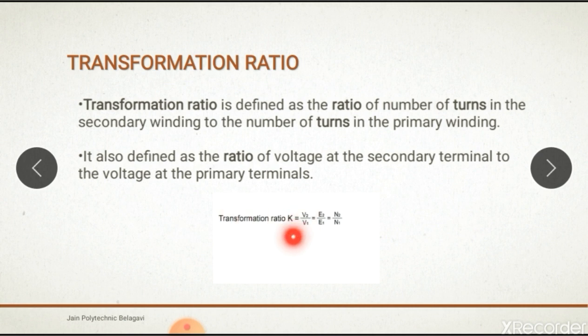Transformer ratio is denoted as K, that is secondary voltage V2 divided by V1, that is E2 by E1 equals N2 by N1. Where N2 is secondary turns and N1 is primary turns.